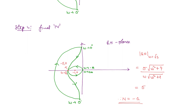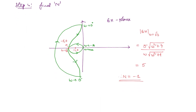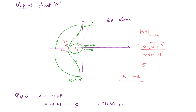Now that we know N = −1 and P = 1, we can find Z. Z = N + P = −1 + 1 = 0. Since Z = 0, there are no closed-loop poles in the right half of the s-plane. This means the system is stable. This is how you find stability using Nyquist criteria.